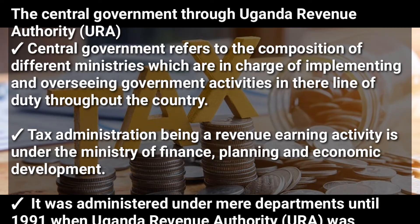Now let's look at the central government through the Uganda Revenue Authority, which is URA. The central government refers to the composition of different ministries which are in charge of implementing and overseeing government activities throughout the country. Tax administration, being a revenue-earning activity, falls under the Ministry of Finance, Planning and Economic Development.